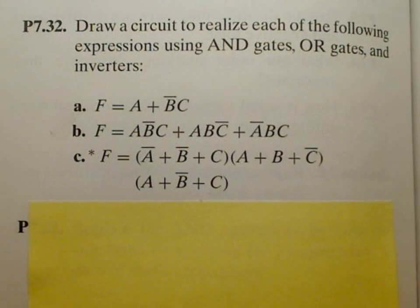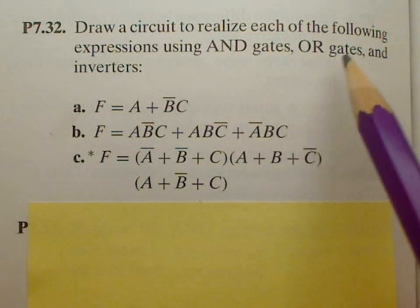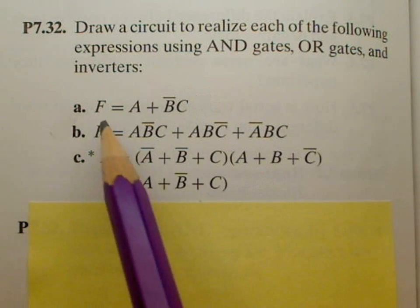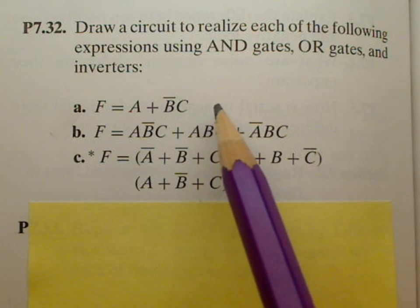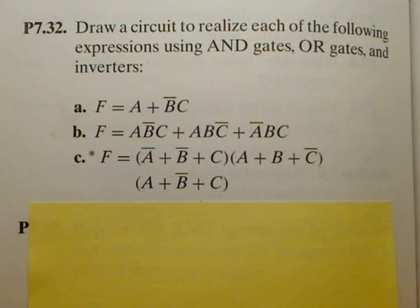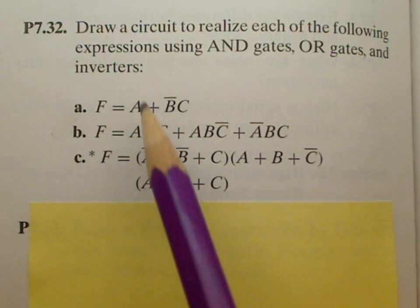So in this problem, what we're going to do is draw a circuit that realizes the expression in part A right here, which has an AND gate, an OR gate, and an inverter, also known as a NOT gate.